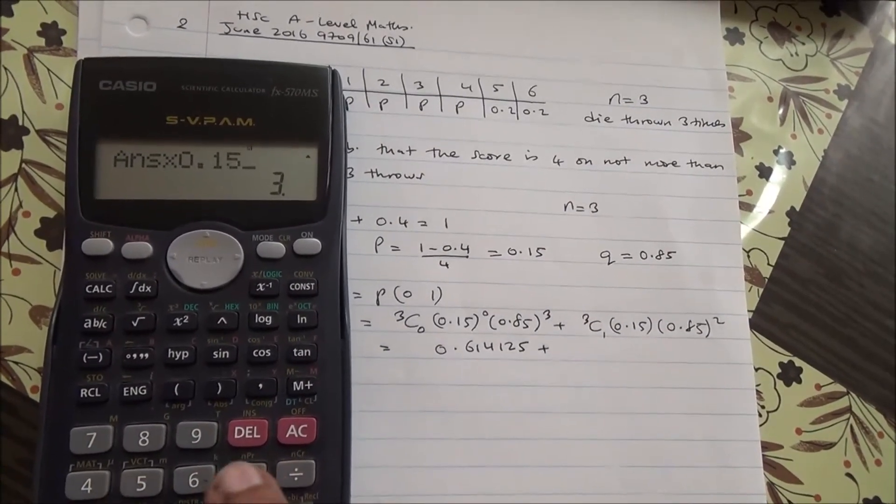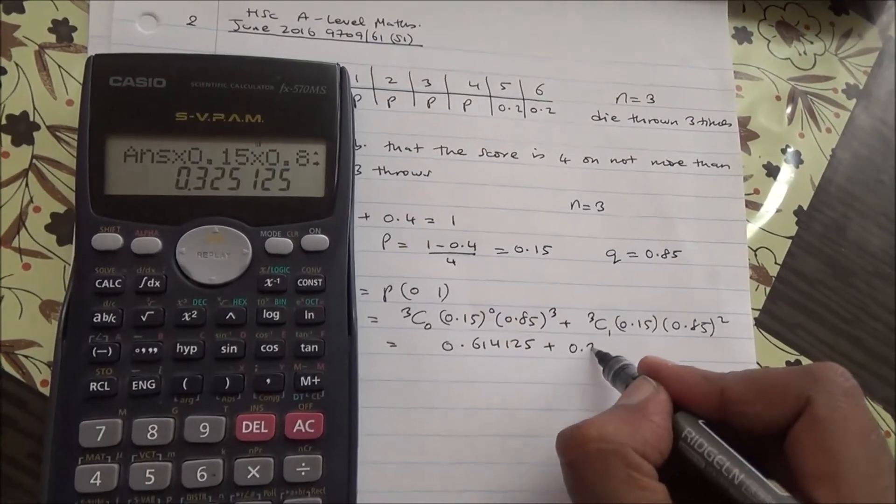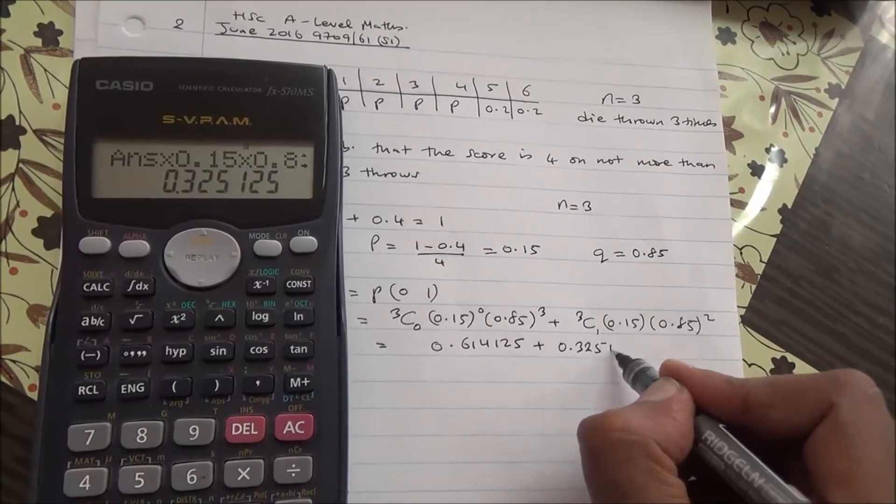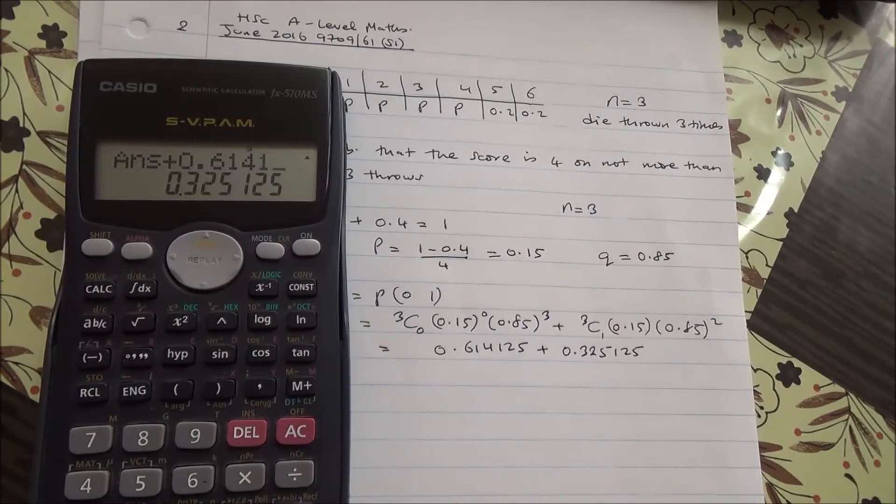Times 0.15, times 0.85 to the square, 0.325125.